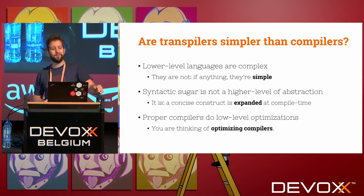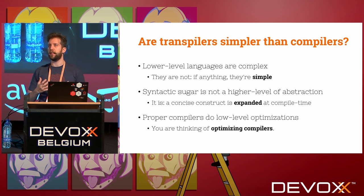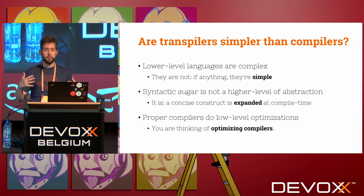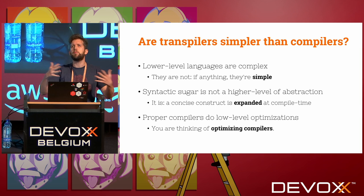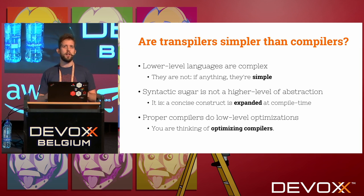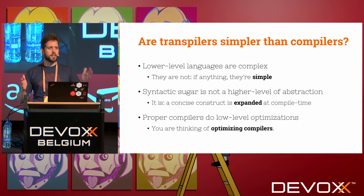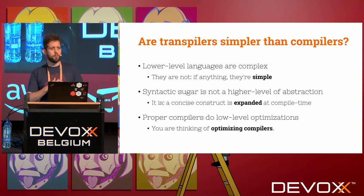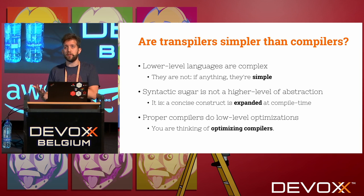I don't really love the word transpiler because it comes with some burden — some myths. One myth is that translating from a high-level language to another high-level language is simpler than translating to a lower-level language. But actually, lower-level languages are simpler. Translating to them is not hard — it's just boring, because your high-level code expands into much more low-level code.